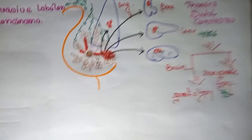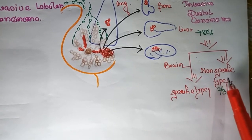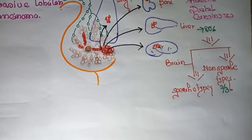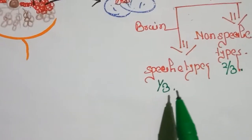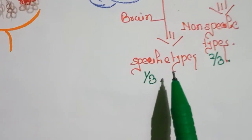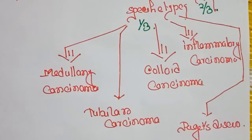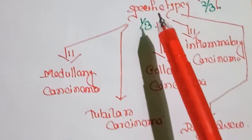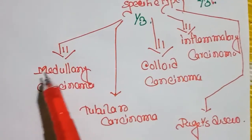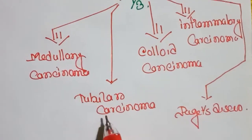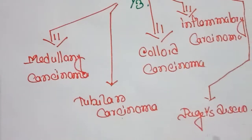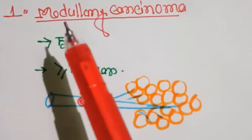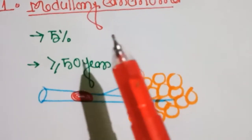The non-specific type indicates that there is no specific cause for the development of breast cancer in those cases. About one-third of breast cancers are classified into specific histological types. Specific types of invasive ductal carcinoma include medullary carcinoma, tubular carcinoma, colloid carcinoma, inflammatory carcinoma, and Paget's disease.